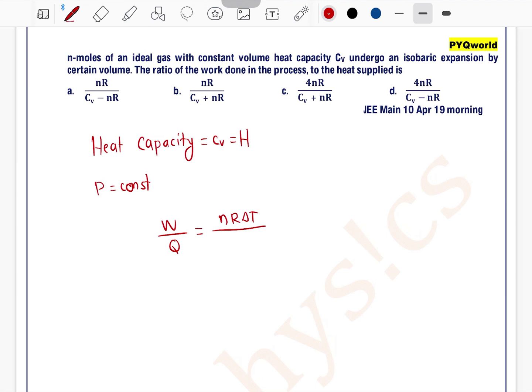That equals P delta V or NR delta T. We can write Q as, for an isobaric process, Q equals N Cp delta T. So this simplifies to R divided by Cv plus R, since Cp equals Cv plus R.